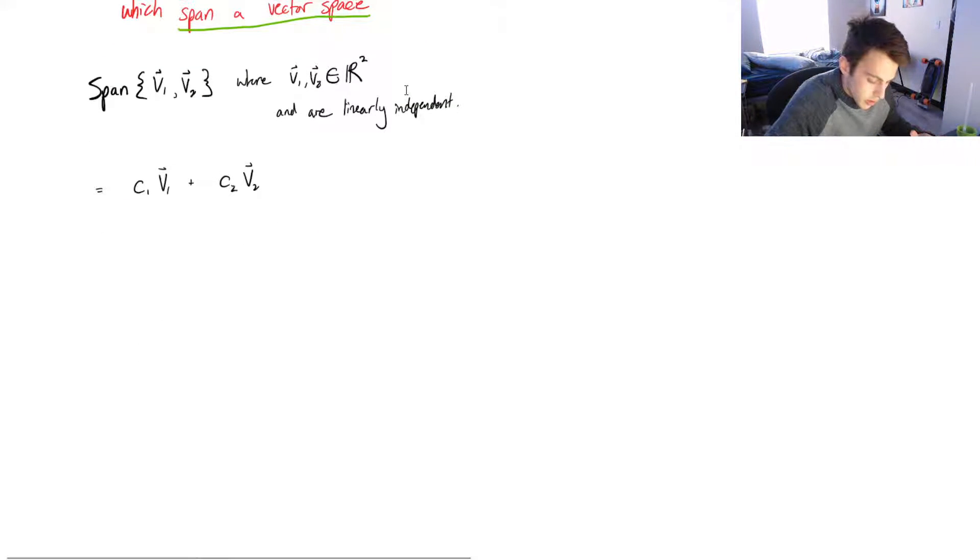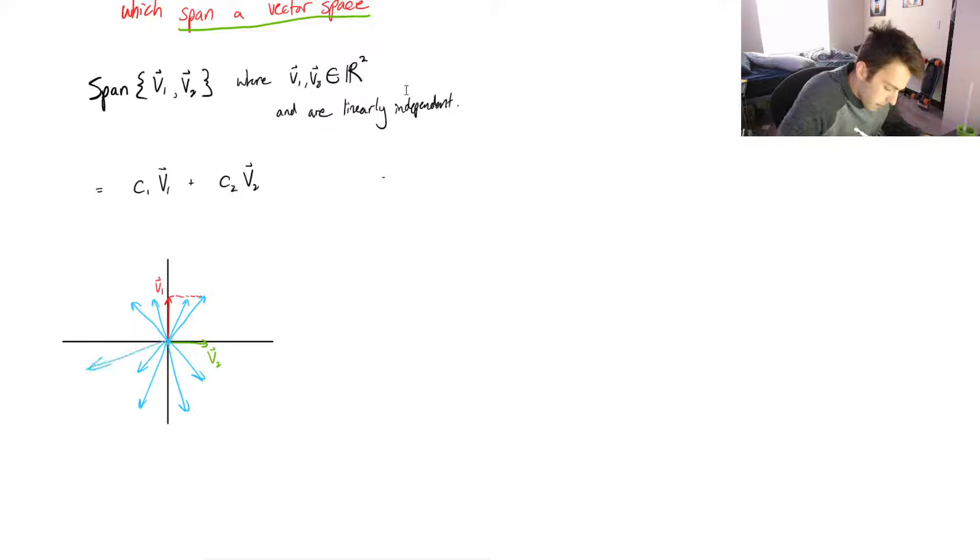Then that would mean that we've got some constant times the first vector plus a constant times the second vector. And let's draw this out to see what this means. So let's say that this is V1, and let's call this green vector V2. And the combination would just be the red vector plus the green vector. So if I were to scale any of them, I could reach any point in the entire, all of R². And if this isn't clear, I would take a look at the other video on my channel on spans. But we can reach every point in R².